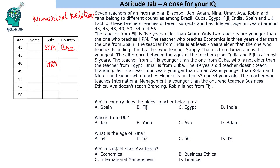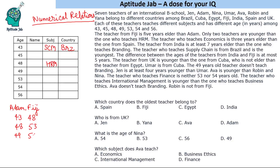This question contains numerical relations, so one must look for statements with such relations. The teacher from Fiji is 5 years elder than Adam. So we find pairs with a difference of 5 in the age values: 43 and 48 is one possibility, another is 48 and 53, and then 49 and 54. So we get 3 cases. By using some more conditions we will be able to eliminate them.